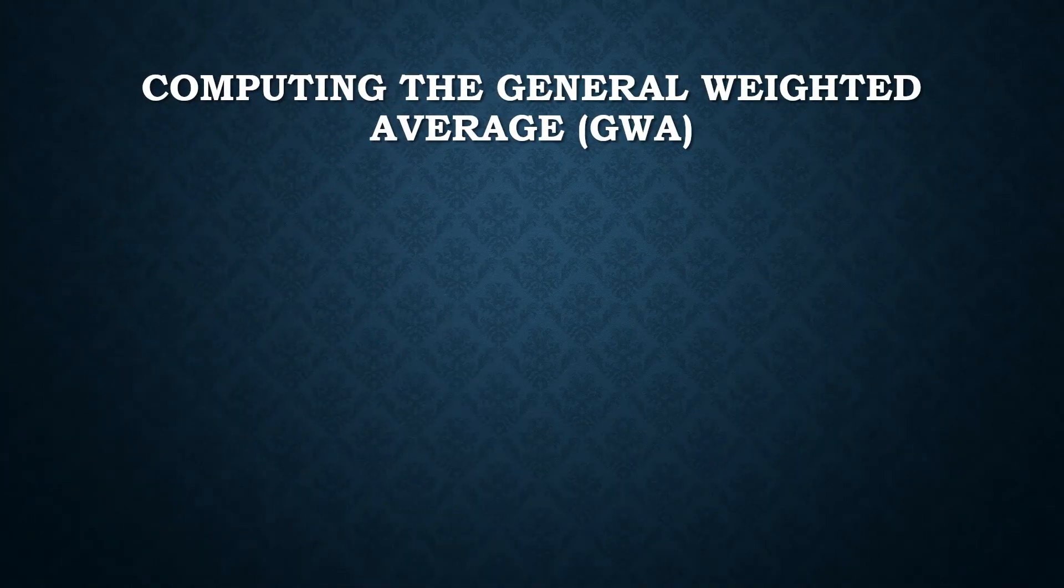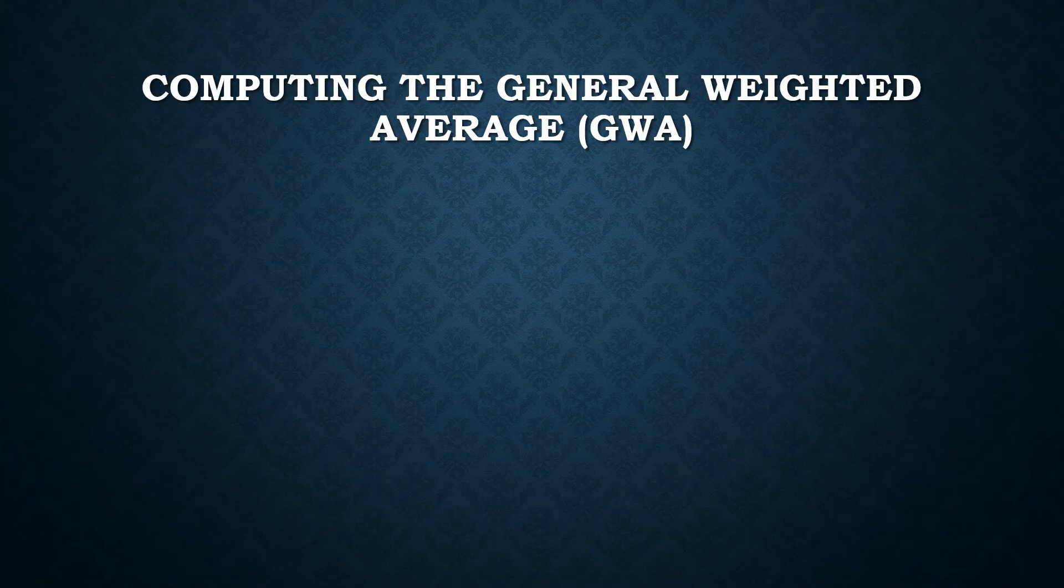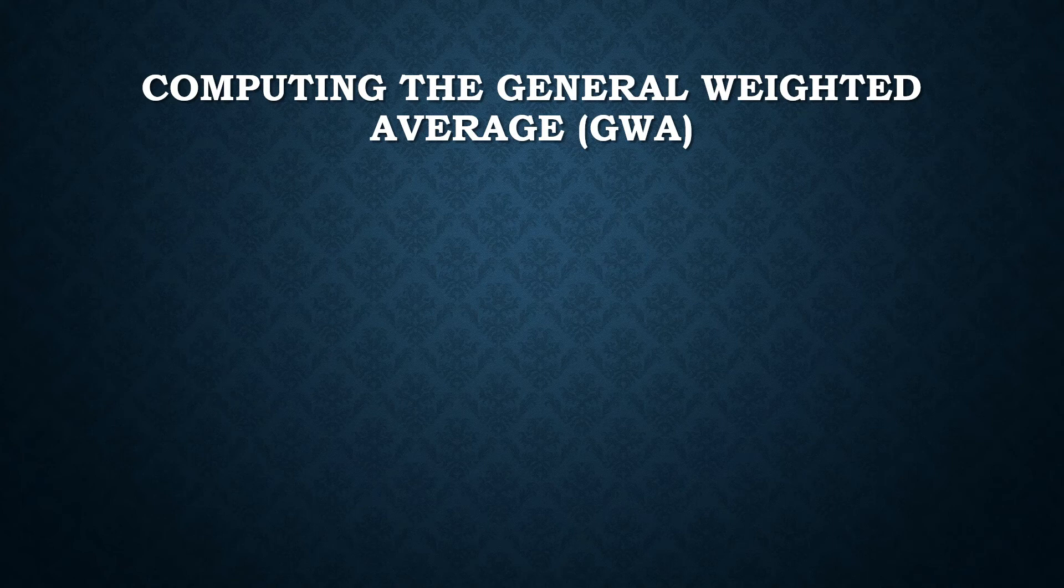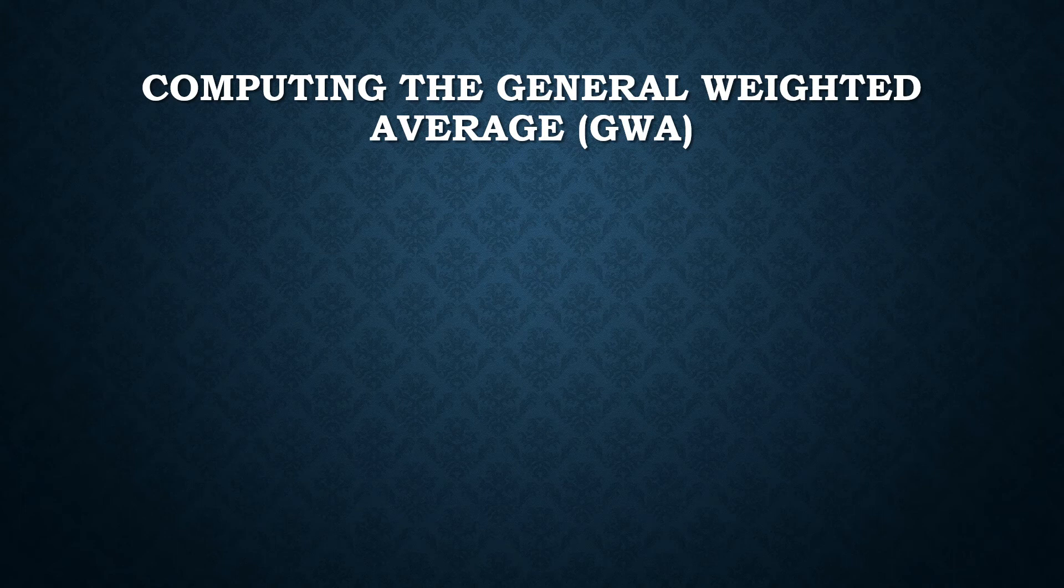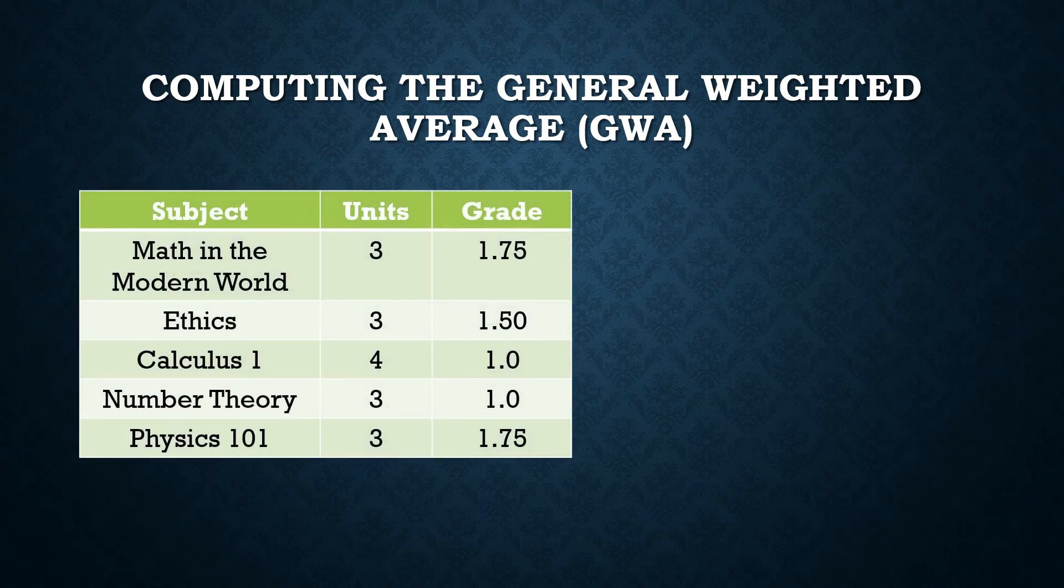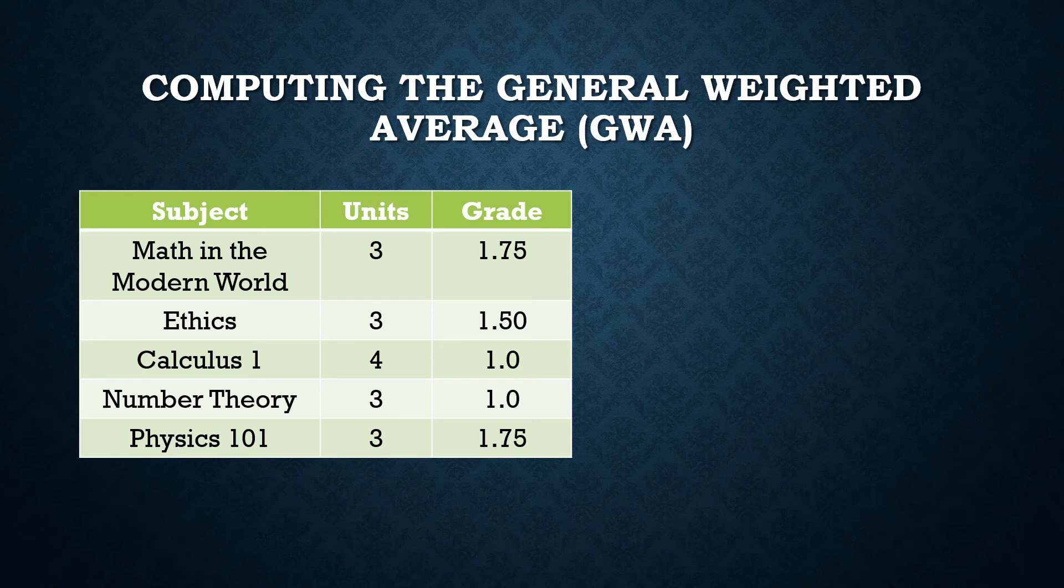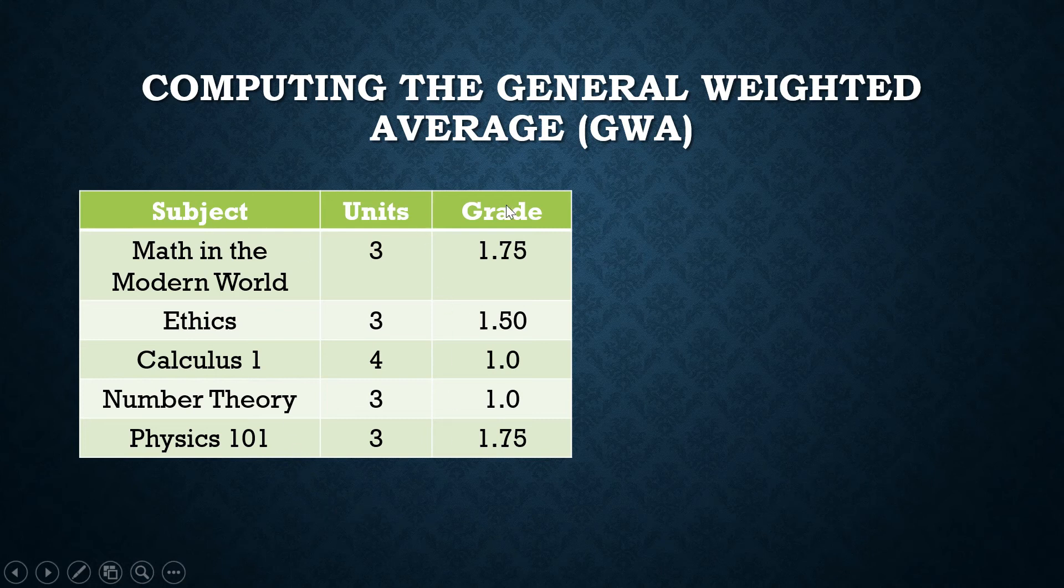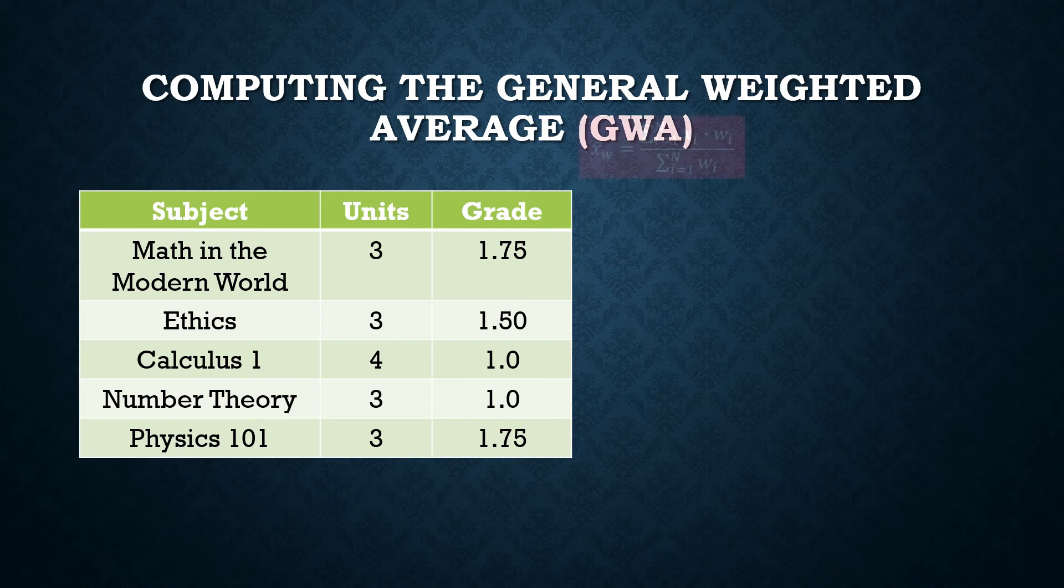How about computing for the general weighted average? At the end of each semester, you will receive a report from your school showing your grades and the subjects that you took for the semester. And the report might look something like this. You have the subjects, the units, and these are the grades. How do we compute for the general weighted average or general weighted mean?